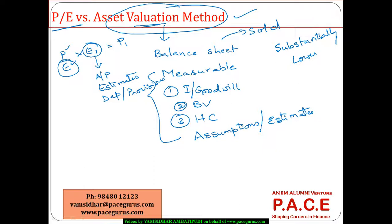The final future profits may be biased to some extent based on the estimates, assumptions, and accounting policies involved. But otherwise, the P/E approach is more theoretically sound compared to the asset valuation mechanism, because details like goodwill, brand, and human capital are not omitted from the calculation. In a comparative note, the price to earnings mechanism is much more appropriate and relevant compared to the asset valuation mechanism.